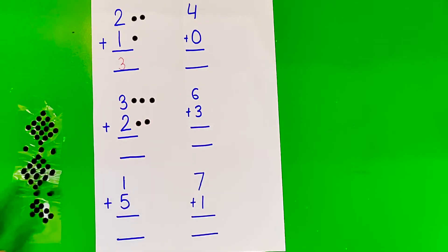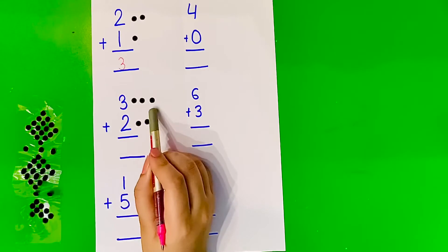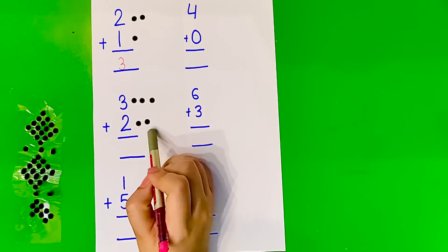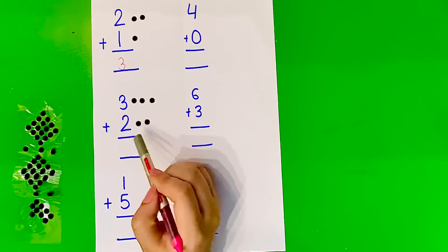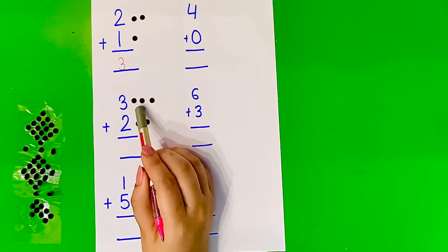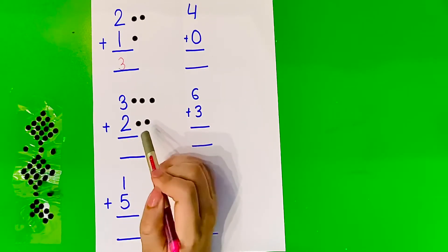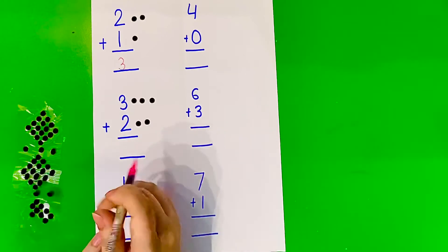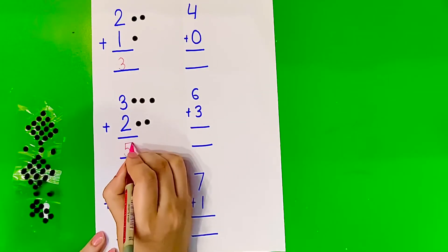Let us see. 1, 2, 3, 1, 2. So let us do 3 plus 2. Let us count all the bindhies here: 1, 2, 3, 4, 5. Let us write 5.